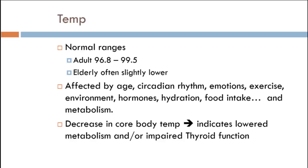98.6°F is the number we always think of, but anything from 96.8 to 99.5 is normal. As we get older and our metabolism slows down, our temperature is usually a little lower. Temperature is affected by age, circadian rhythm — your sleep cycles and the time you go to bed — emotional levels, and exercise, so everything affects your temperature.